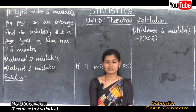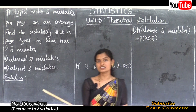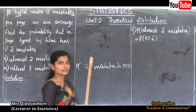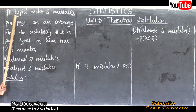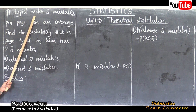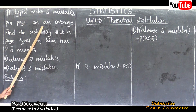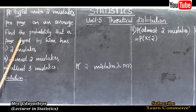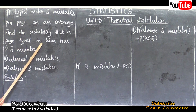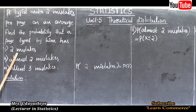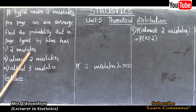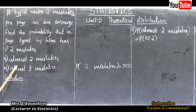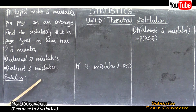Let us see the first problem: a typist makes two mistakes per page on average. Find the probability that a page typed by him has: the first sub-question is two mistakes, the second sub-question is at most two mistakes, and the third sub-question is at least three mistakes.